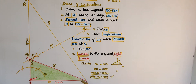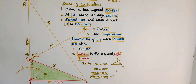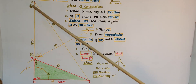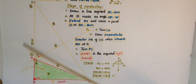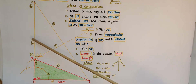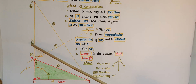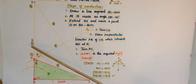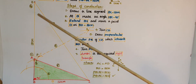Now extend BX and mark a point D such that BD is equal to 18 centimeters, which is the given value of AB plus AC from the problem.